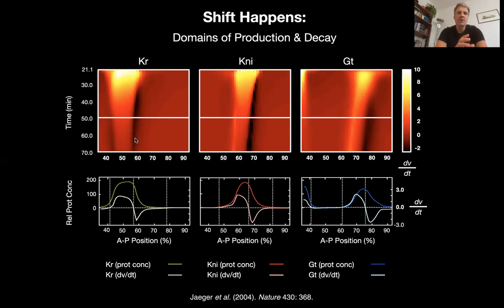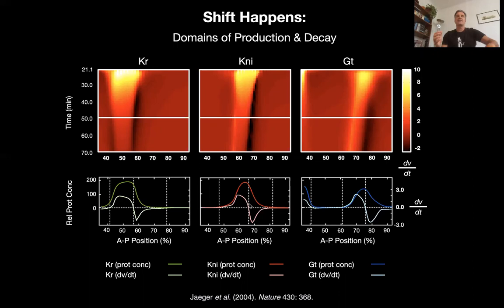The first publication I had on this was in 2004. The answer is quite fascinating. Here you see space-time diagrams where early is on top and time flows downwards, showing where protein is produced (bright color) and where it is degraded (dark color). Each domain has an offset: the domain where a gap protein is actively produced is only in the interior of the actual expression domain, and there is a region of active decay. This is a mechanism based on regulation of expression, not on diffusion.